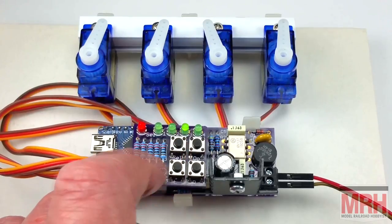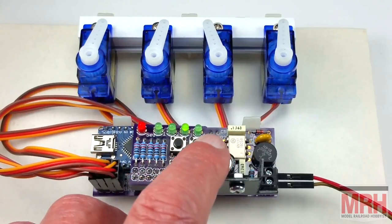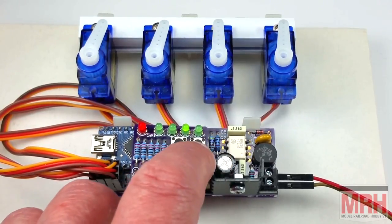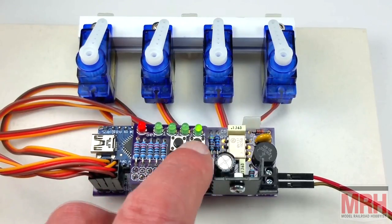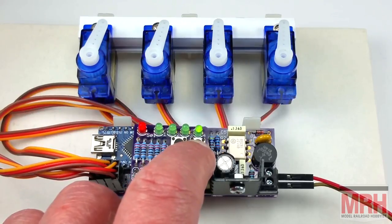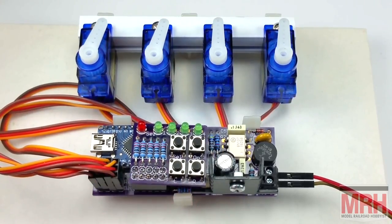And then press select to move on to servo 3. We can skip setting servo 3 by pressing operate. And again press operate. And again press operate to skip setting 4. We can always come back and do the whole thing again.